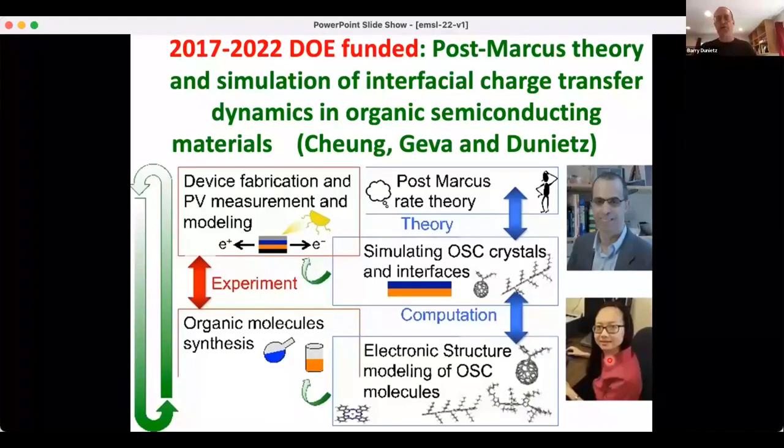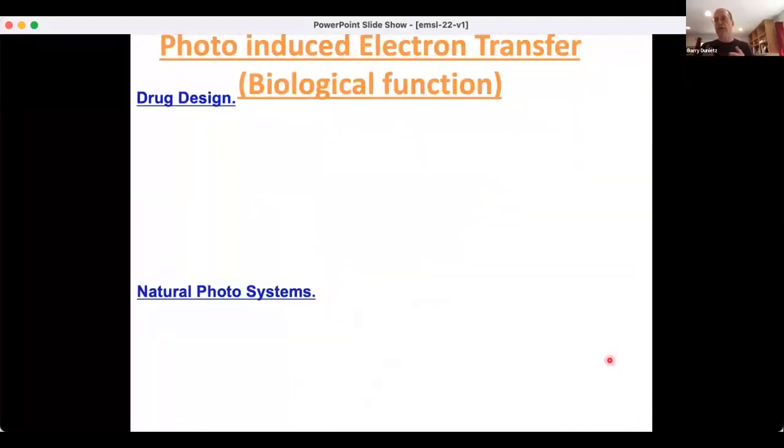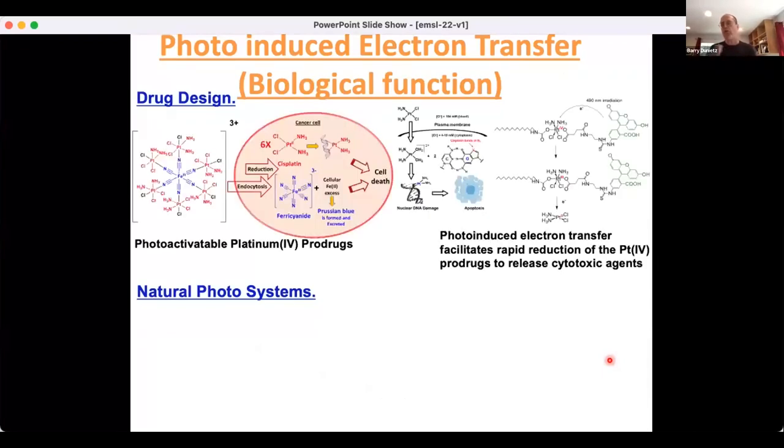I'll be focusing on the electronic structure aspect. We have two types of systems of biological significance that we're investigating. First, we look into contributing to design of prodrugs. In this example, we're considering platinum-4 complexes where controlled reduction at cancerous cells leads to conformational changes with platinum-plus-2 revealing a cisplatin derivative that leads to death of the cancerous cells.